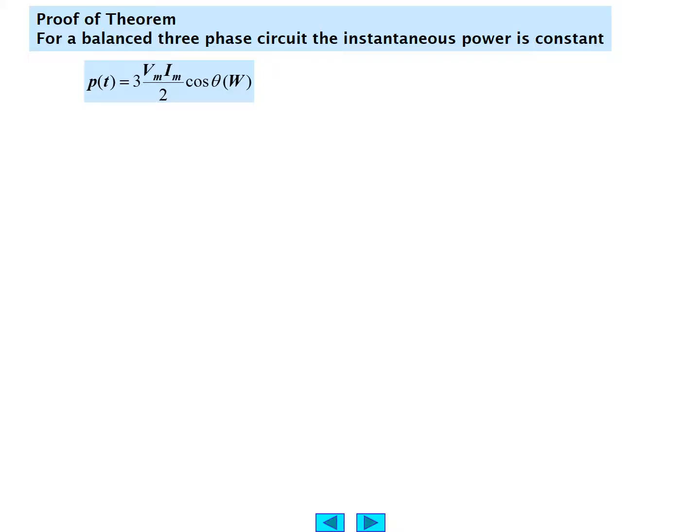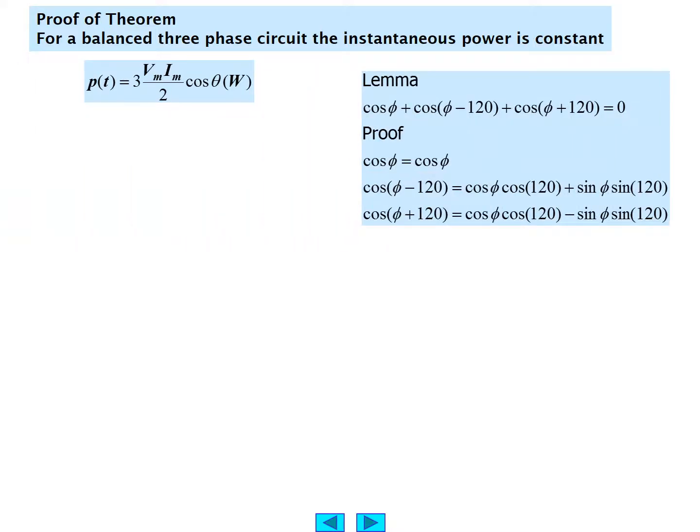Let's do a proof of this theorem. We did say for the balanced three-phase circuit, the instantaneous power is a constant, 3 V_m I_m over 2 cosine theta watts. We can do that by looking at some trigonometric identities. For example, a trig identity: cosine phi plus cosine phi minus 120 plus cosine phi plus 120 equals 0. That's a trigonometric identity. We can prove that by substitution of each of the terms. Cosine phi is equal to cosine phi. Cosine phi minus 120 is, by a trig identity, cosine phi cosine 120 degrees plus sine phi sine 120 degrees. And cosine phi plus 120 would be cosine phi cosine 120 minus sine phi sine 120. These are trigonometric identities which would be useful to have in your notes.